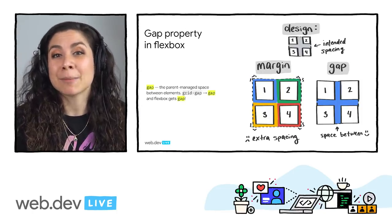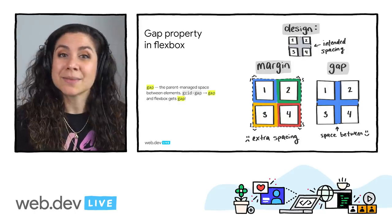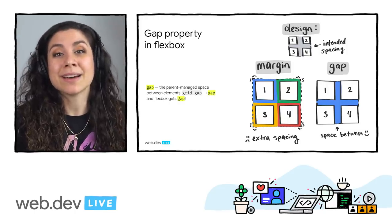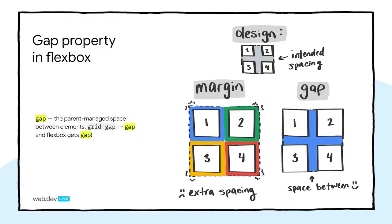We're also getting the Gap property in Flexbox. This is exciting because of how many times we've been styling a series of items and wanting space between those items but not around them. Gap enables the parent element to control spacing — not the children — making it easier to style items uniformly. Currently you can use Gap to create tracks with CSS Grid, but you'll also be able to use it with Flexbox layout, giving you all the benefits of Gap with a greater choice of layout mechanism.